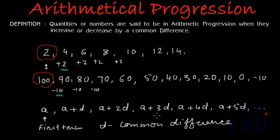And how can you find a particular term in this progression? If I number these terms in this series, this is the first term, this is the second term, this is the third term, this is the fourth term, this is the fifth term and this is the sixth term.